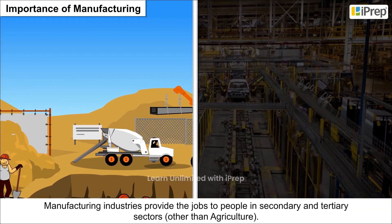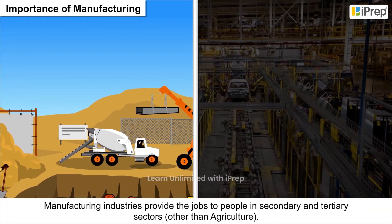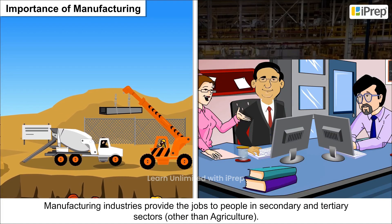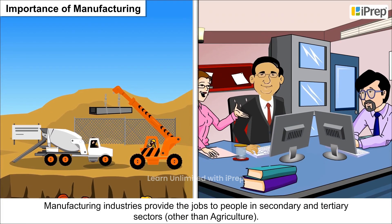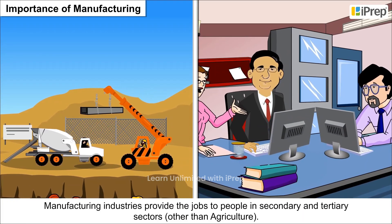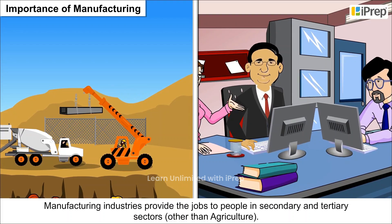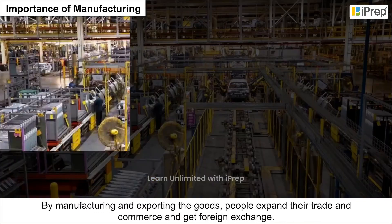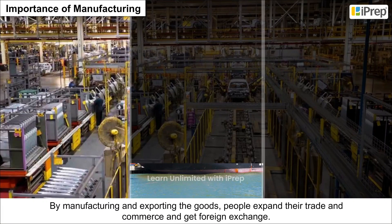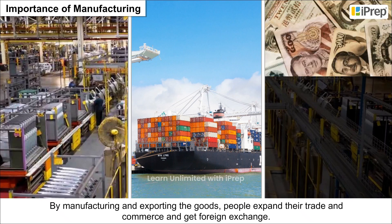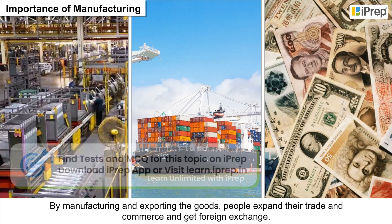Industries provide jobs to people in secondary and tertiary sectors other than agriculture. By manufacturing and exporting goods, people expand their trade and commerce and get foreign exchange.